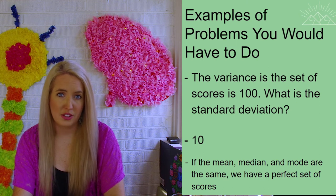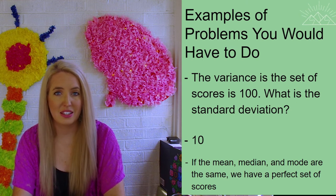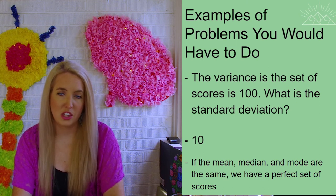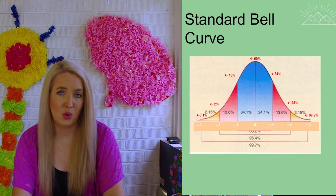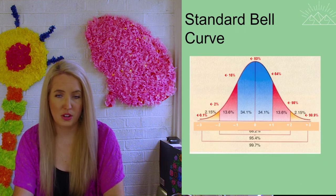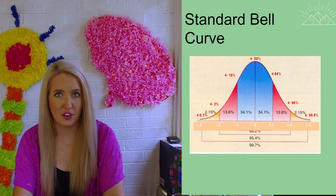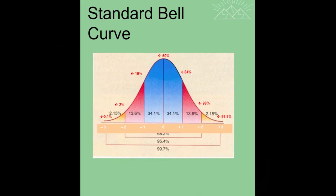If your mean, median, and mode in your set of data all end up being the same, what we end up having is what's known as a perfect or standard set of scores. And that is going to give us a standard bell curve. And if you look at the standard bell curve, there are different percentages that run along the top of the curve that you will want to know.